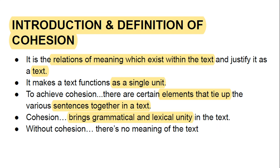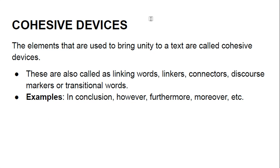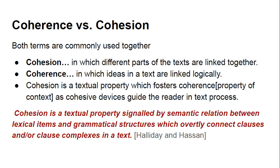The things which bring unity to the text work as devices — these are called cohesive devices. These devices stick a text together and bring unity to it. They are also called linking words, linkers, connectors, discourse markers, or transitional devices — for example: in addition, in conclusion, however, furthermore, moreover, briefly, in short.